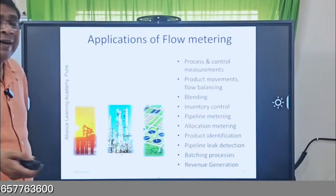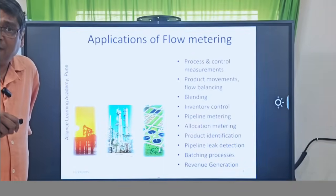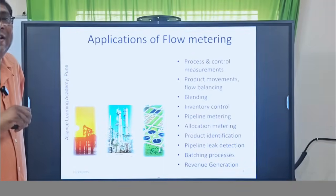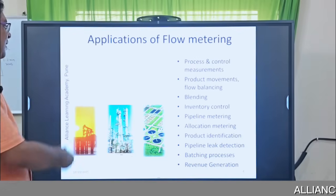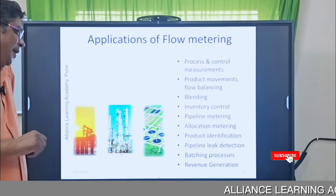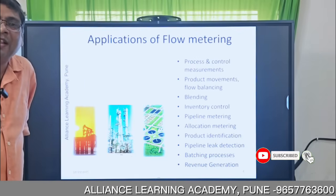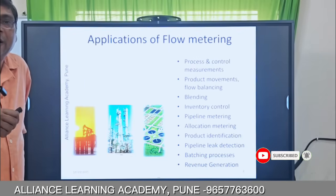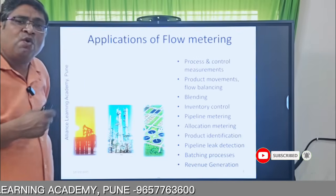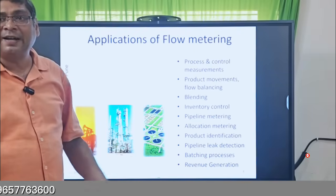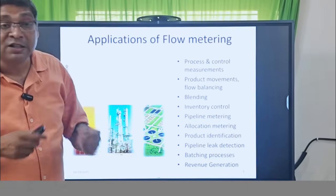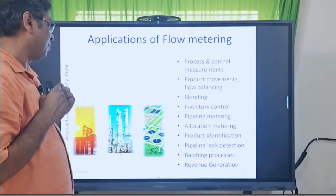Product identification is another important application, similar to product movement. You can identify which kind of product is flowing through the flow meter by using parameters like density — for example, using a mass flow meter.